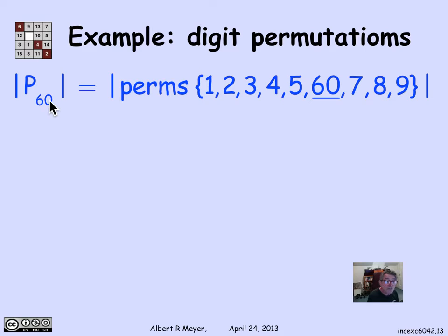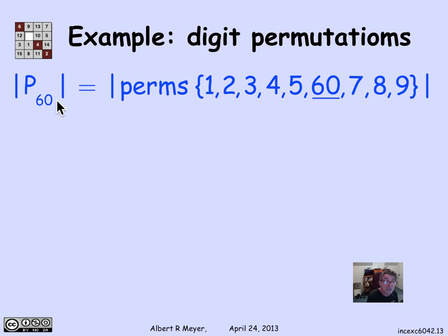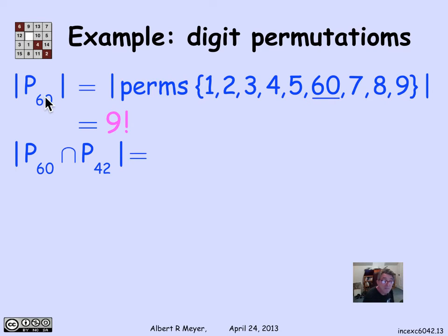We can apply the formula: the set of permutations having a 6-0, 0-4, or 4-2 equals the sum of those having each individual pattern, minus those having two patterns, plus those having all three. P60 is the set of permutations with a 6-0 in them. We can think of these as permutations of nine items: the digits 1–5 and 7–9, plus the object '6,0' lumped together. The number of such permutations is 9 factorial — and the same applies to P04 and P42.